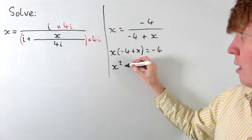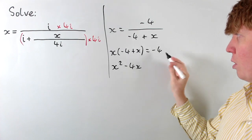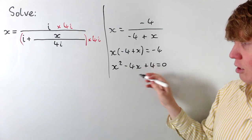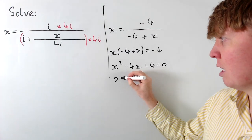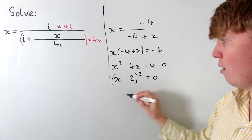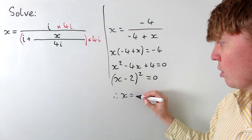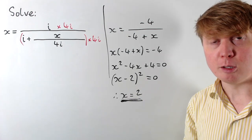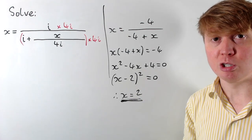we get x squared, take away 4x equals negative 4. Or we could add the 4 onto the left-hand side. And then you see that this quadratic factorises nicely now as x minus 2 all squared equals 0. So then you can see that the only possible solution, we get a repeated route to our original equation. And the only possible solution then is that x equals 2.